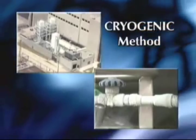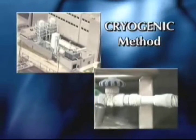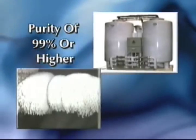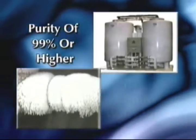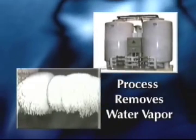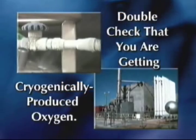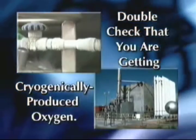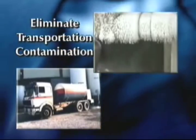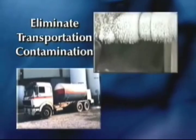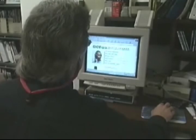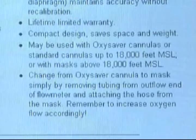Most of the oxygen sold today in the U.S., including aviation oxygen, is produced by a cryogenic method using sub-freezing temperatures. This method produces an oxygen purity of 99% or higher. Aviation oxygen is subject to a process that removes water vapor. It is recommended that you double-check that you are getting oxygen produced cryogenically, and purchase liquid oxygen as close to the production site as possible to eliminate transportation contamination. You are responsible for checking with the equipment manufacturer for the latest operational and emergency procedures to assure your safety.